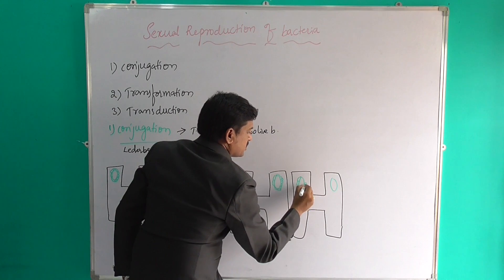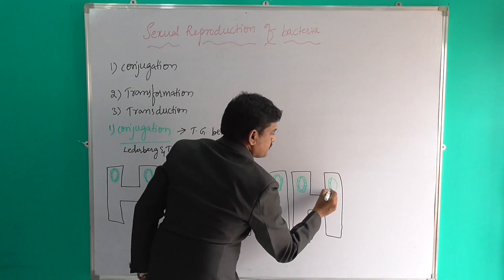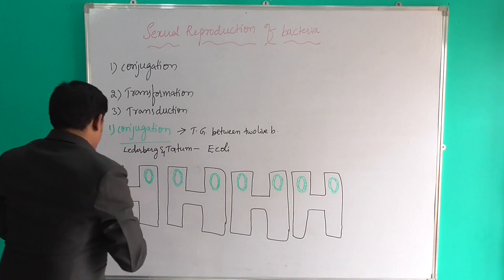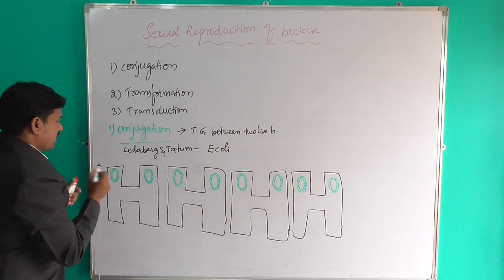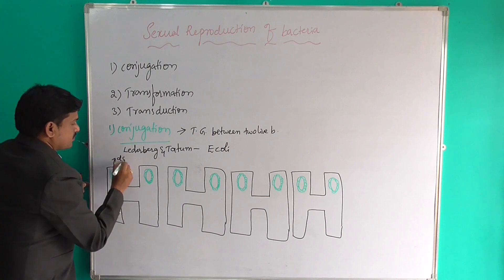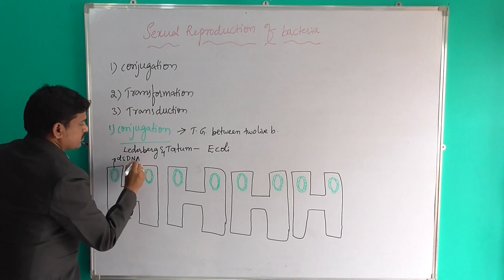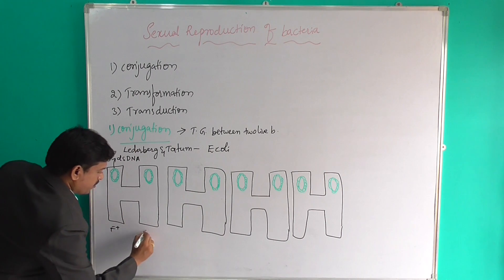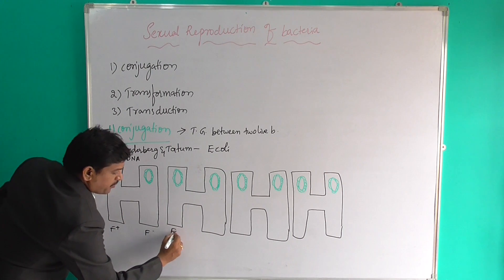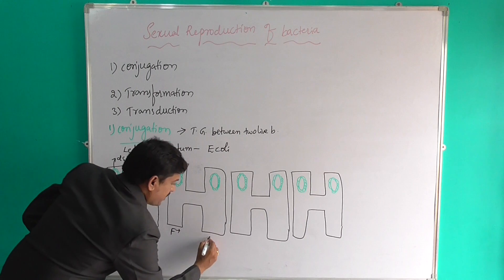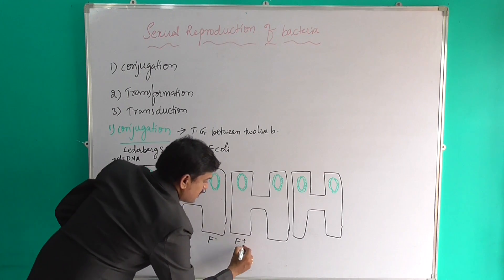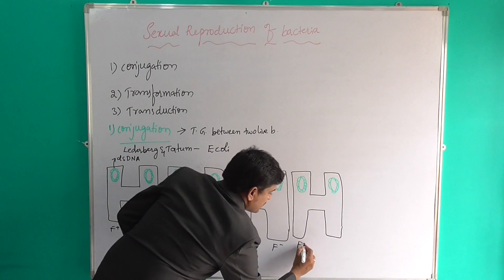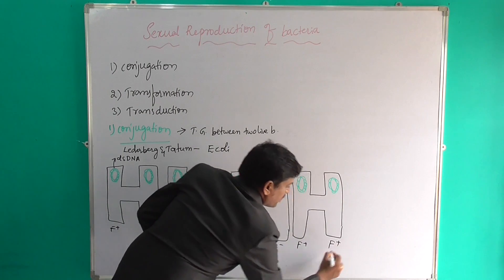In this diagram, we can see DSDNA. These cells are labeled F plus and F minus. The cell with the F plasmid is F plus, and the cell without is F minus. When the F plasmid is transferred, the F minus cell becomes F plus — be careful of this distinction.